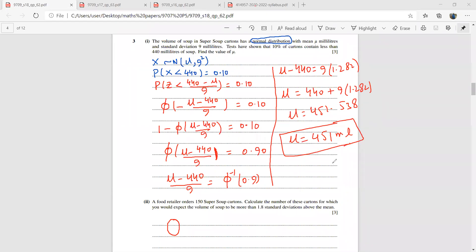Now next, a food retailer orders 150 of these. Calculate the number of these cartons for which you would expect the volume of soup to be more than 1.8 standard deviations above the mean. So first of all, we need to find the probability of this X to be more than 1.8 above the mean.